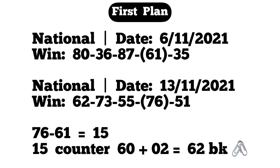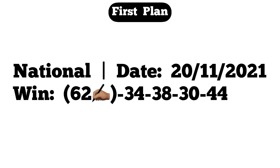This plan works with key 2, so every time we get a counterpart, we add key 2 to it. So 60 plus key 2 gives us a 62 banker. That means the following week the 62 banker should drop. Let's check the following week result. Moving on to 20th November 2021, the winning numbers were 62, 34, 38, 30, and 44. So the 62 banker dropped live exactly at first position. We use only the winning numbers — I don't include the machine numbers because the plan isn't about those.